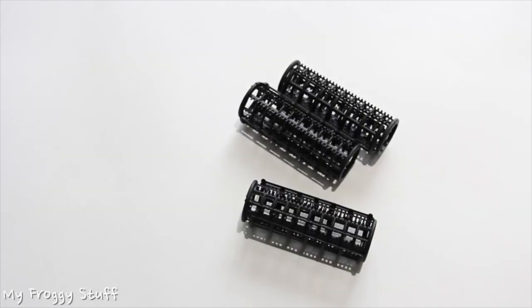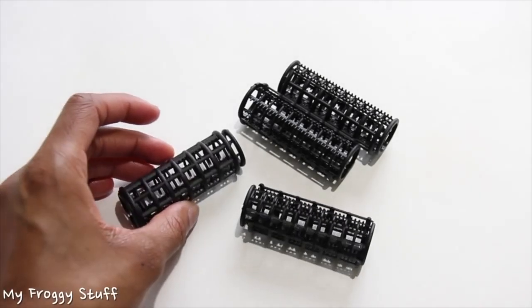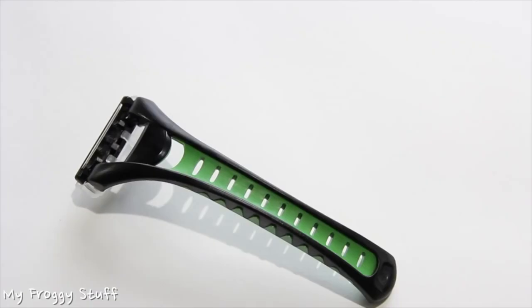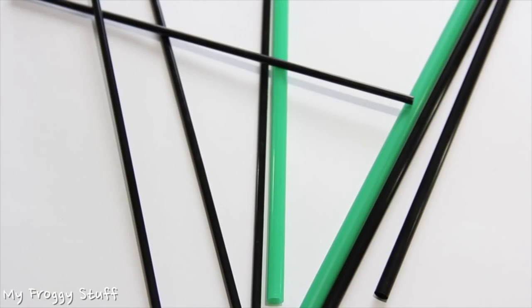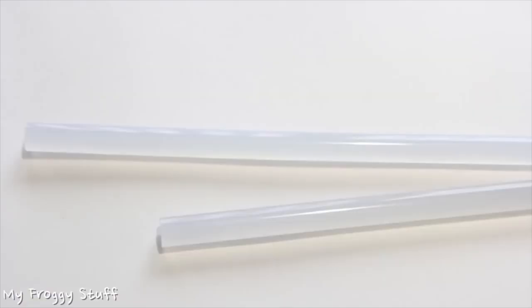I am going to make a push lawnmower for a doll using snap cover rollers, an old disposable razor, straws and coffee straws, the wheels from a toy car, and glue.